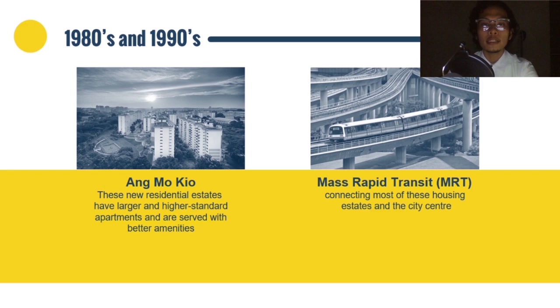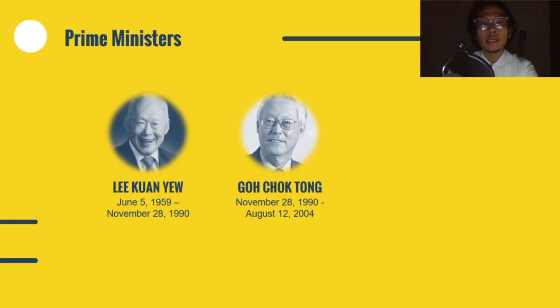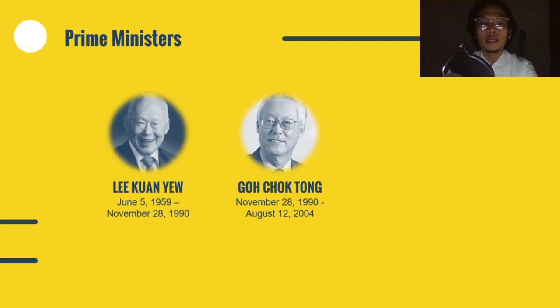These new residential estates have larger, higher-standard apartments served with better amenities. Today, 80 to 90 percent of the population lives in HDB apartments. In 1987, the first Mass Rapid Transit (MRT) line began operation, connecting most housing estates and the city center. Lee Kuan Yew resigned from office on November 28, 1990, and was replaced by Goh Chok Tong, who became the second Prime Minister of Singapore, serving until August 12, 2004.